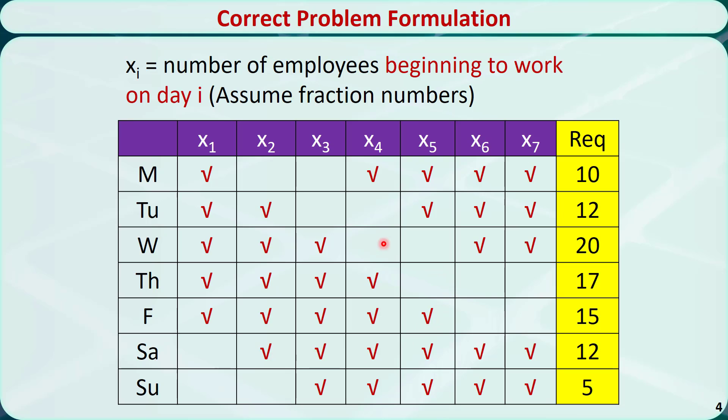So the total number of employees needed is just the sum of x1 through x7. We are not double counting any employee in this case.